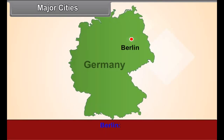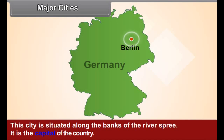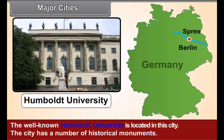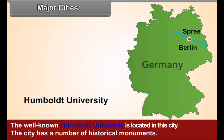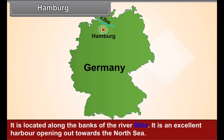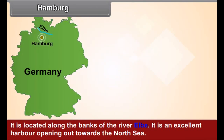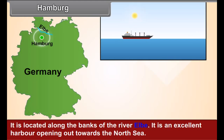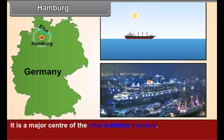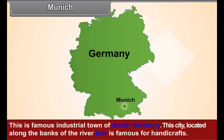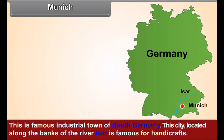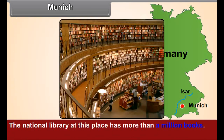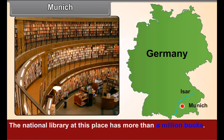Berlin is situated along the banks of the river Spree and is the capital of the country. The well-known Humboldt University is located in this city, which also has a number of historical monuments. Hamburg is located along the banks of the river Elbe. It is an excellent harbour opening towards the North Sea and is a major centre of the shipbuilding industry. Munich is a famous industrial town of South Germany, located along the banks of the river Isar, and is famous for handicrafts. Its national library has more than a million books.